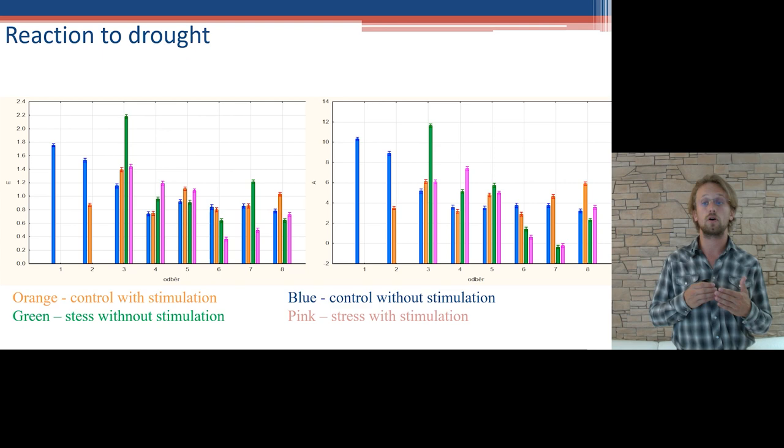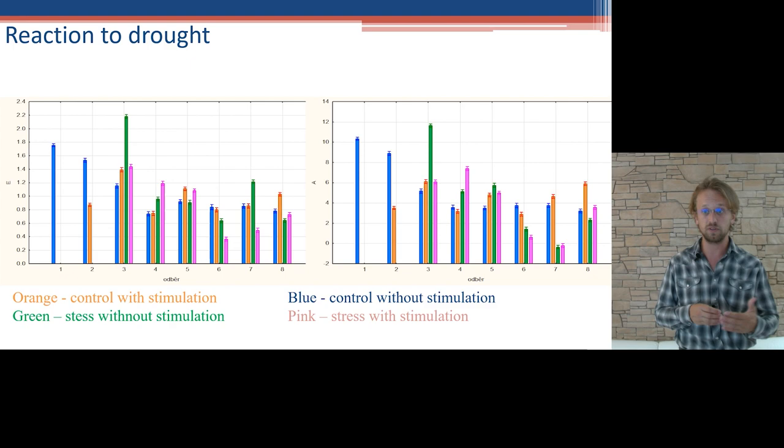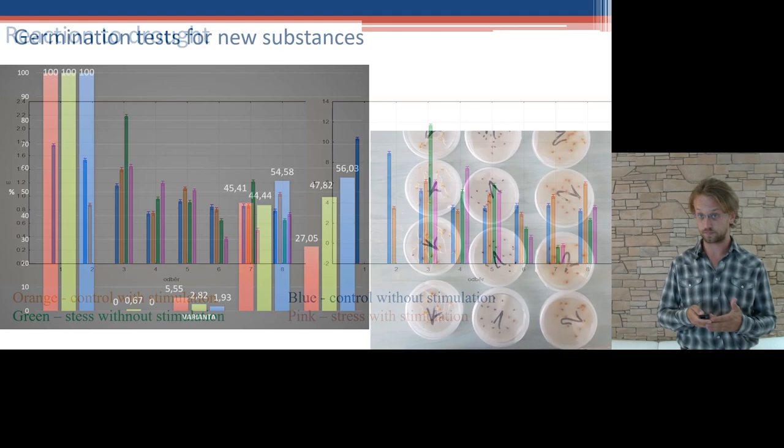Another interesting conclusion from this experiment was that plants that were in moisture well-being all the time, which is the orange column, had as a result of stimulation higher photosynthetic activity and transpiration than the control group. It means that stimulation is not suitable only for plants under stress but also for all plants where we can help the plants to perform better and as a result to have better yield and quality.